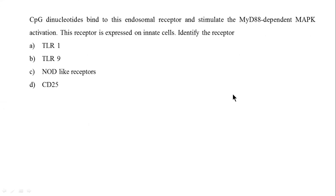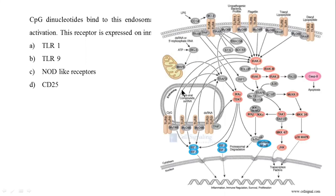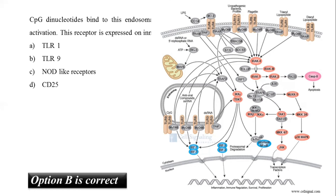The next question: CpG dinucleotides bind to this endosomal receptor and stimulate MYD88-dependent MAP kinase activation, exposed in innate cells. From the figure, CpG dinucleotides bind to the endosomal TLR9 receptor, stimulating MYD88-dependent MAP kinase activation. The correct answer is option B, TLR9.